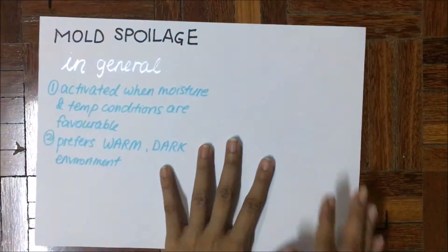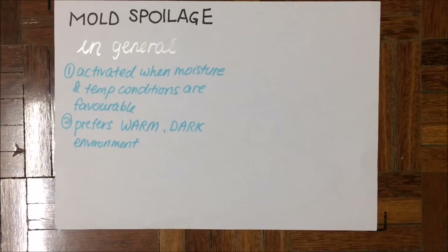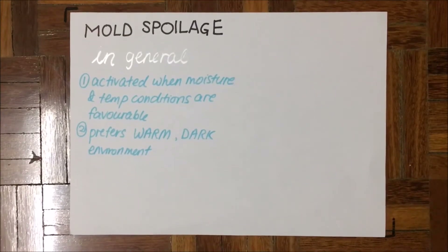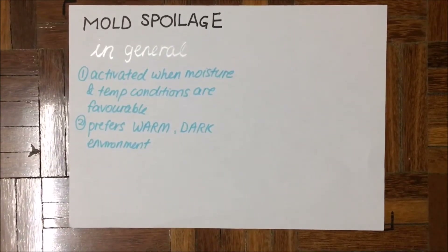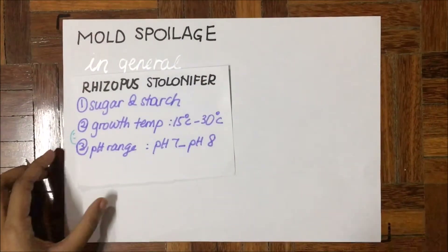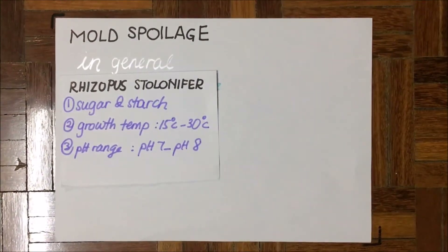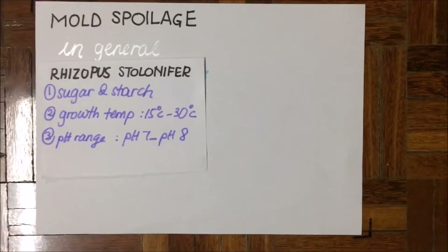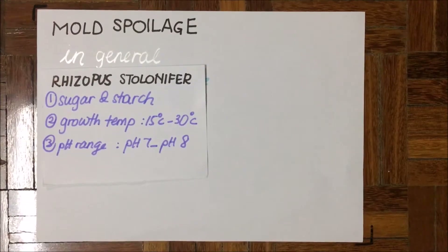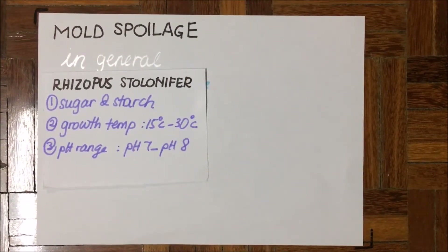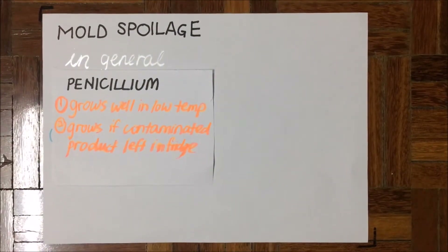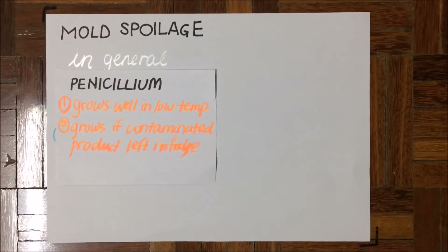For mold spoilage, mold is activated when moisture and temperature conditions are favorable, and it prefers warm, dark environments. Rhizopus stolonifer survives only in the presence of sugar and starch, has a growth temperature of 15°C to 30°C, and a pH range of 7 to 8, which is neutral. Penicillium grows well at low temperatures, such as when the product is stored in a fridge.